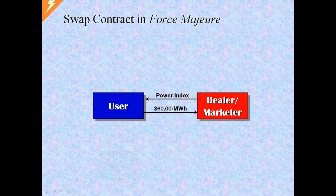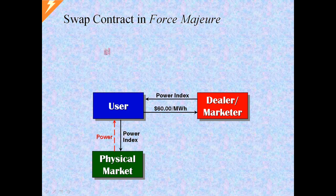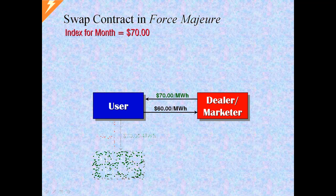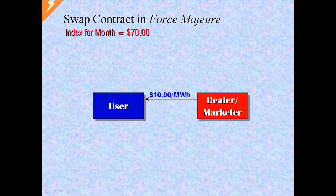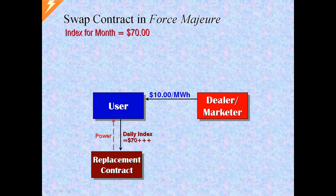With the swap, force majeure only disrupts the index supply contract. There is no force majeure provision in the swap, so it remains in place and price protection from the swap remains. For example, if index on the first of the month was set at $70, both the swap and the supply contract indexes would be fixed at $70. If during the month force majeure is declared, physical supply is lost. But the swap is not lost, and in this case will continue to pay the user the net $10. The power would have to be replaced, the cost likely being some force majeure premium over the market price level of around $70. Netting the $10 received from the swap, the cost will be in the area of $60 plus the force majeure premium.